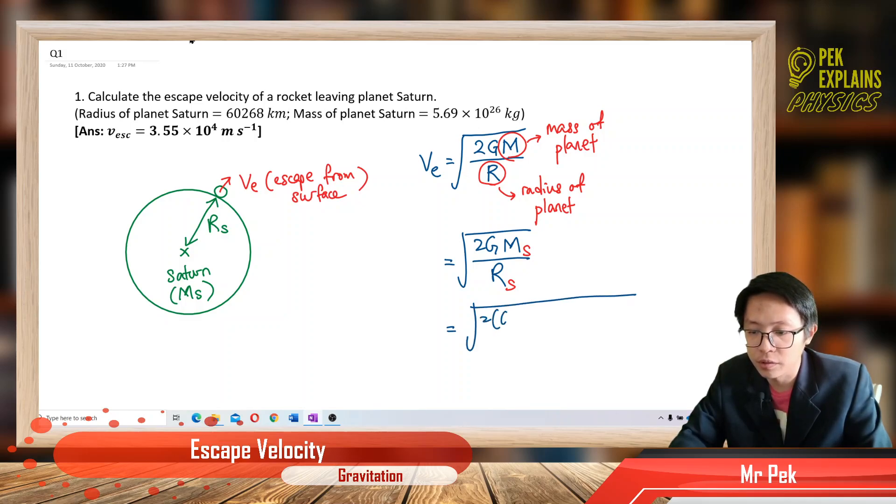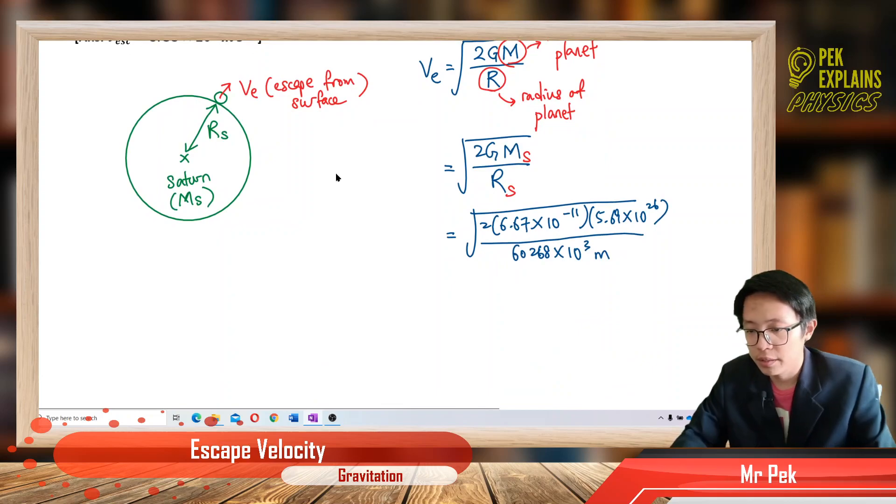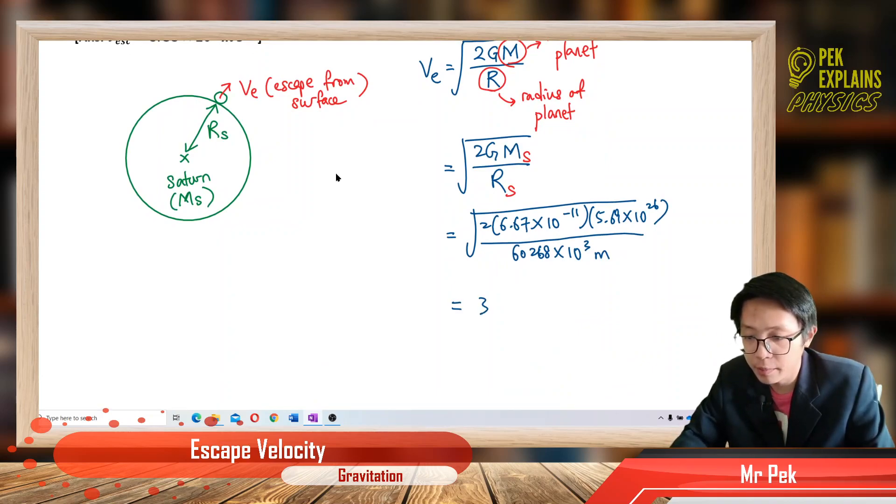So, G is 6.67 negative 11, mass of Saturn is 5.69 exponent 26, radius of Saturn is 60268 exponent 3. Yeah, because it's kilometer. So, what answer do you get? I get 3.55 exponent 4 meter per second.